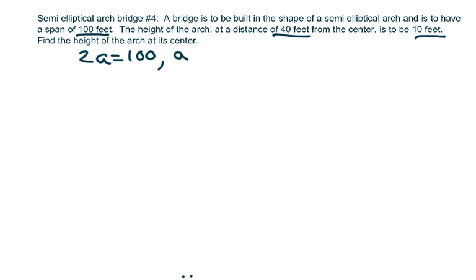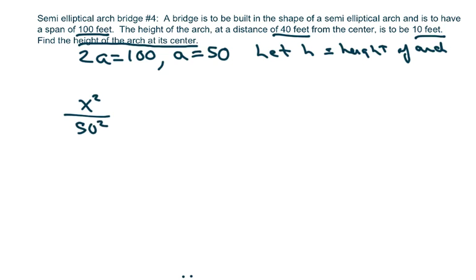Now we're going to let h be the height of the arch. Since we're placing this at (0,0), we get the equation x²/50² + y²/h² = 1. Let me rewrite this: x²/2500 + y²/h² = 1.